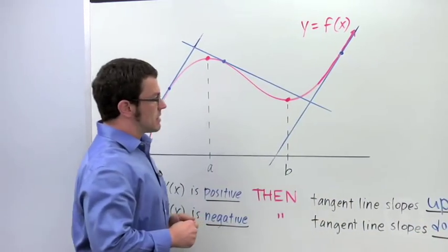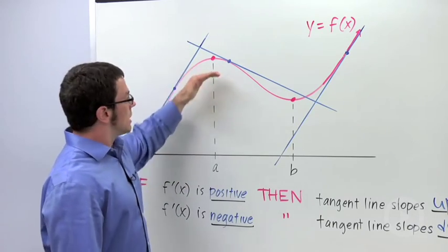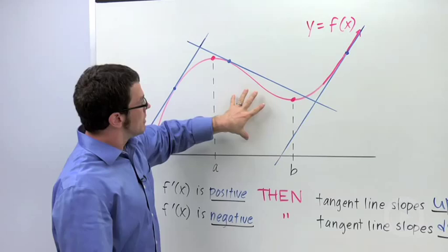And this tells us where the function increases or decreases. Where the tangent lines slope up, the function's increasing. And where the tangent lines slope down, the function's decreasing.